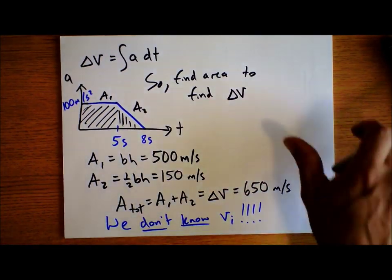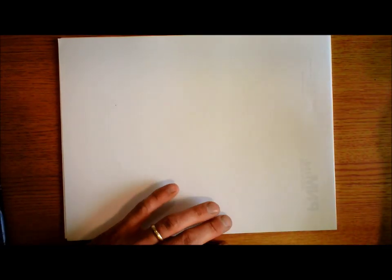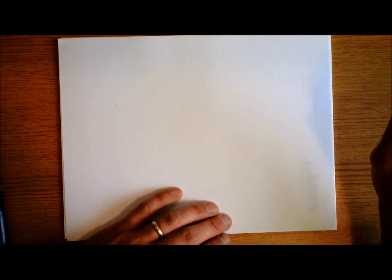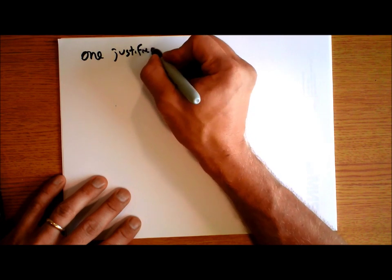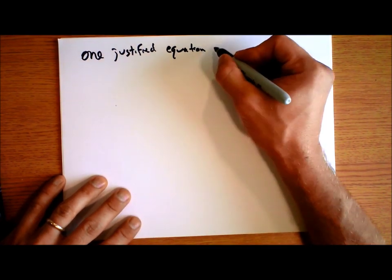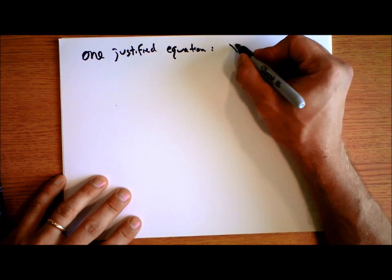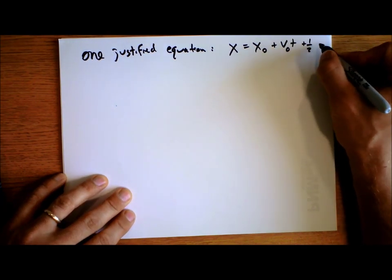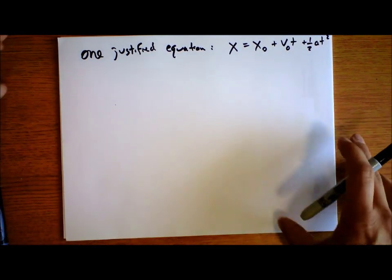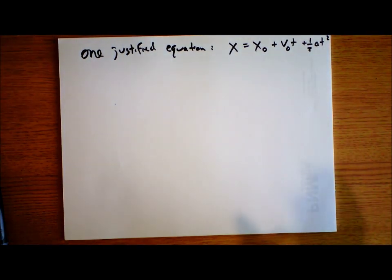Another cool way we can use calculus in physics is to justify equations that in the first year of physics seemed completely unjustified. One cool equation we've already justified is that final position equals initial position plus initial velocity times time plus one-half acceleration times time squared. We'll justify a couple more equations that looked kind of weird the first time you saw them, starting with forces.